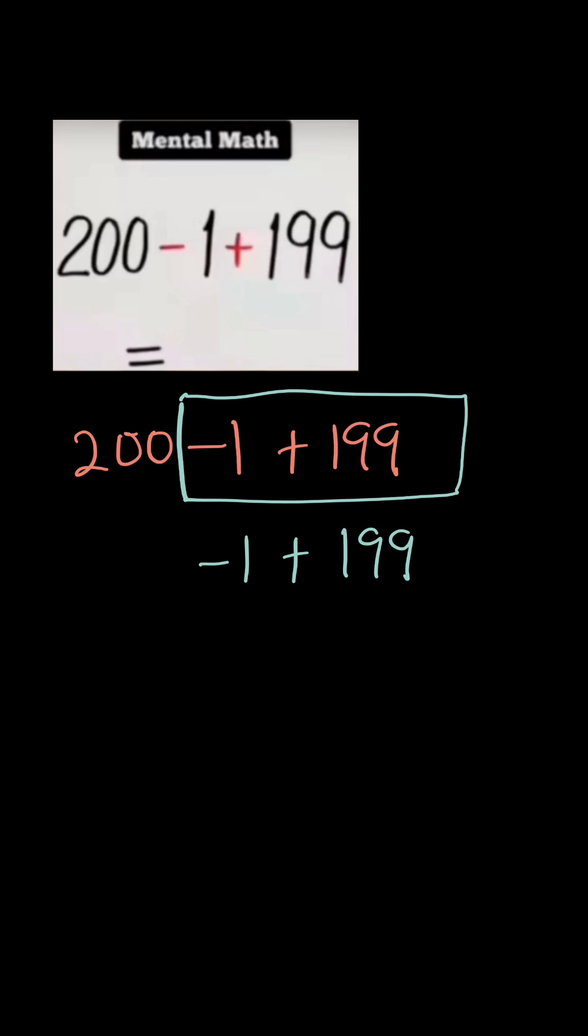You're going to get 198. If you don't want it to confuse you, you can rewrite this as 199 minus 1, and that will give you 198. Now the sign which comes here is going to be plus. So 200 plus 198 is going to also give us 398.